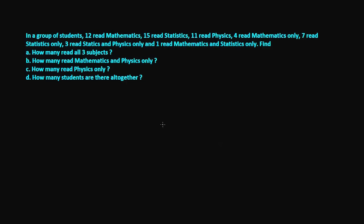Let's read the question. In a group of students: 12 read mathematics, 15 read statistics, 11 read physics, 4 read mathematics only, 7 read statistics only, 3 read statistics and physics only, and 1 reads mathematics and statistics only. We need to find: how many read all three subjects, how many read mathematics and physics only, how many read physics only, and how many students are there altogether.